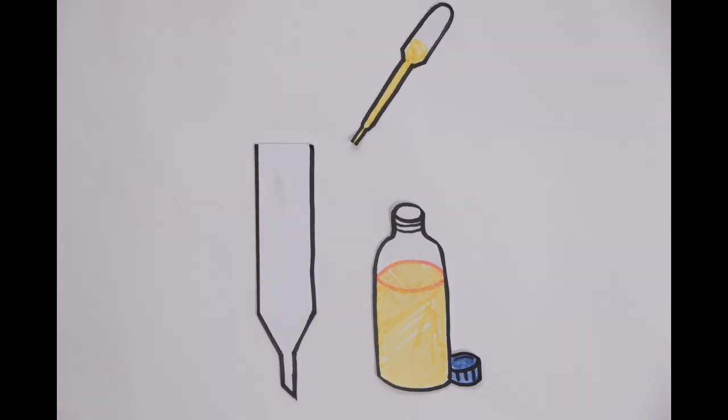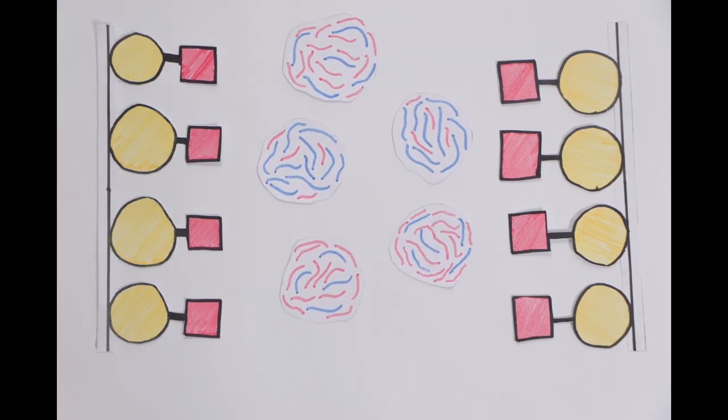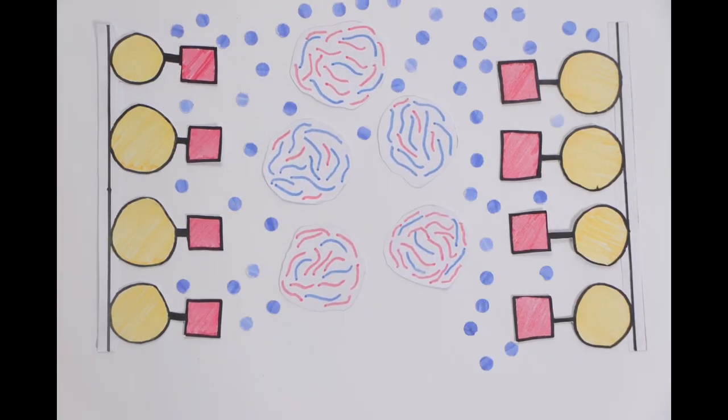The beads, which are attached to the ligands, are packed into the column. The sample containing the protein of interest is added into the column. An aqueous buffer is then added.